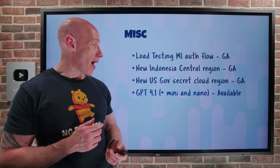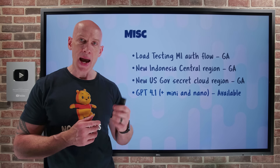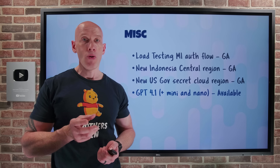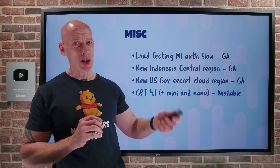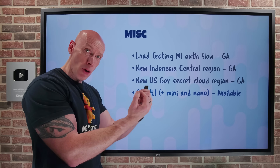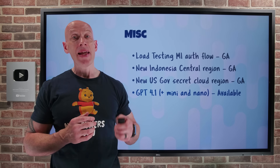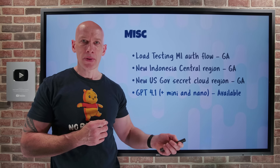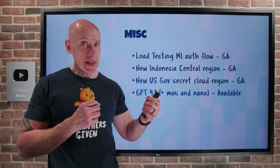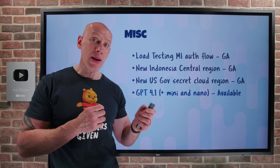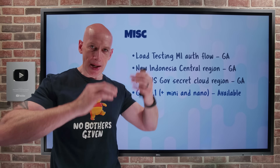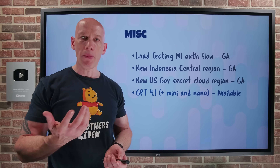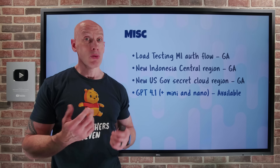GPT-4.1 and its mini and nano variants are now available in Azure OpenAI. These models outperform the previous GPT-4.0 and GPT-4.0 mini across the board, with big gains in coding and instruction following. They support text and image input with text output, up to 1 million tokens of context, and 32,768 output tokens. The mini reduces latency and cost; the nano is great when you want really fast and cheap responses. Even the mini and nano still score very highly.